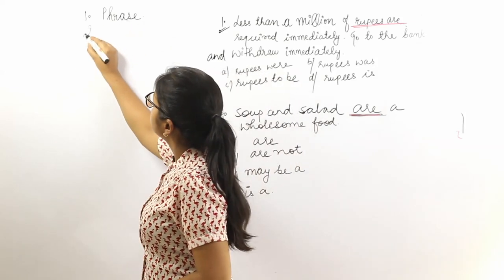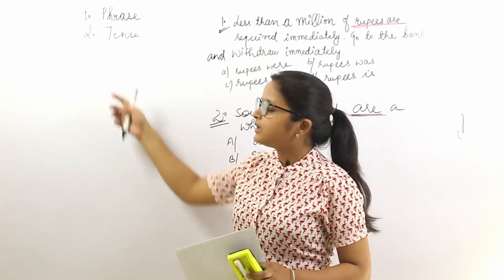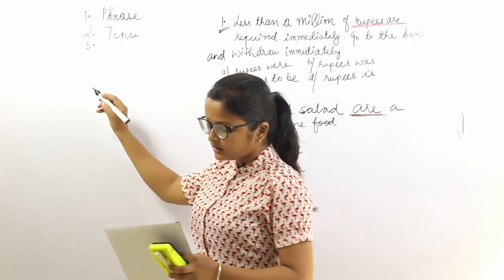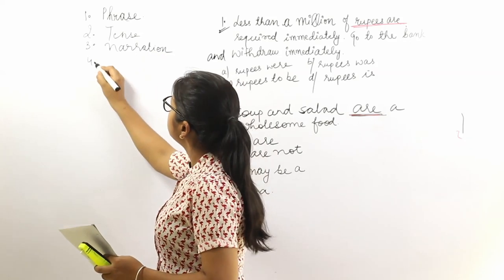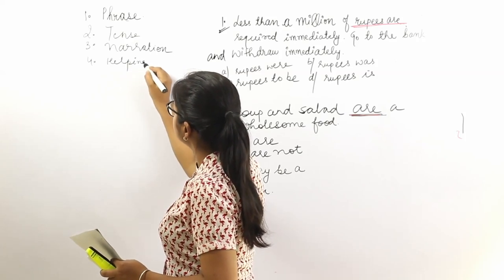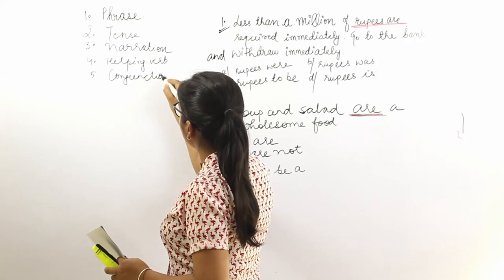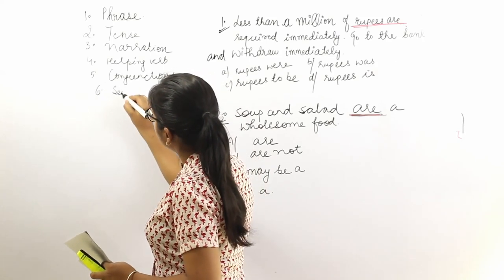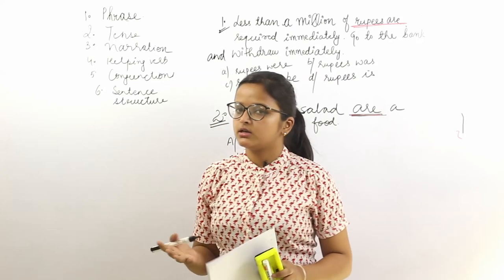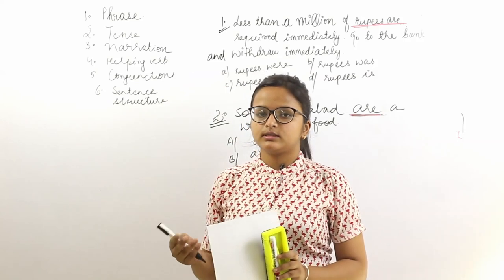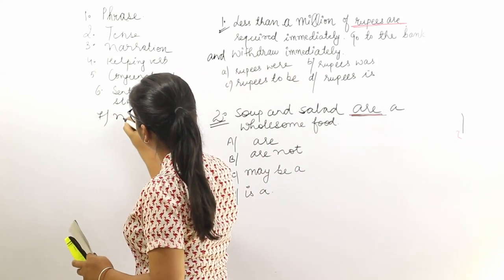The second category is tenses — sometimes a sentence contains an error based on tenses, and similarly in phrase replacement. The third is narration, which is quite common in phrase replacement questions. The fourth is helping verbs. The fifth is conjunctions. The sixth is sentence structure — you may need to shuffle words in the options to make the sentence grammatically correct. The seventh is modals.